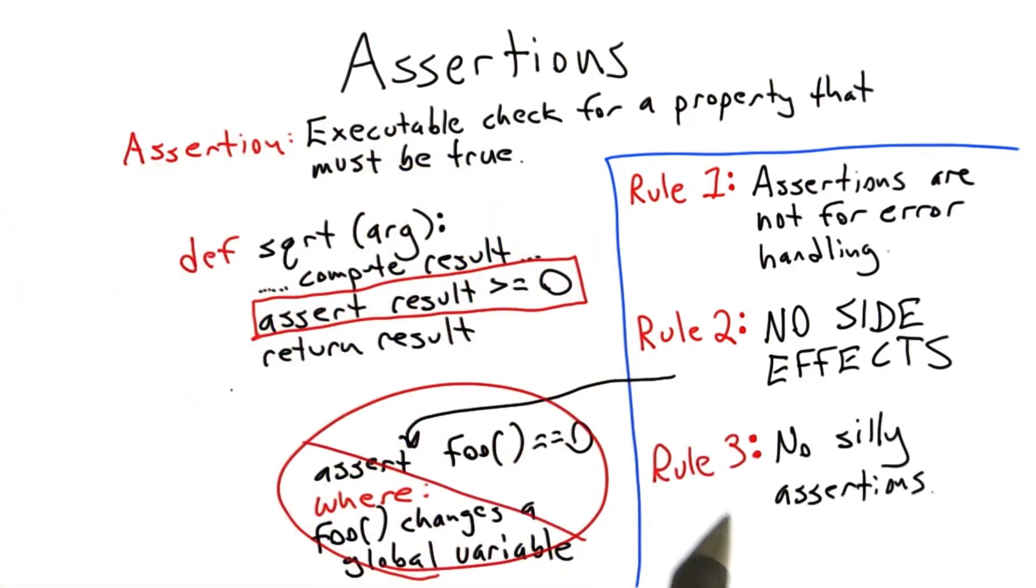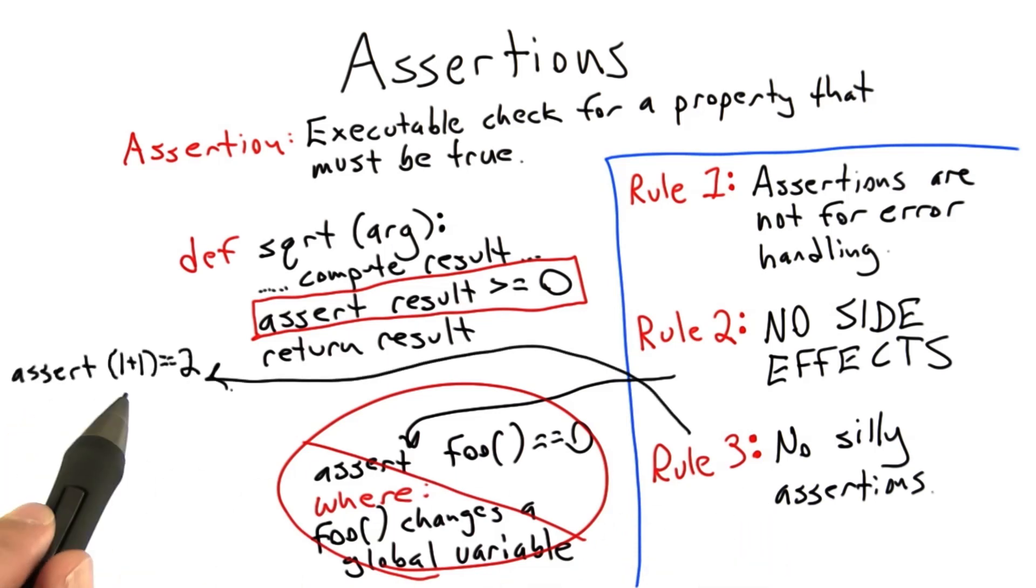Now rule 3 is, we don't want to put silly assertions into our code. Let me give an example. So here we're asserting that 1 plus 1 equals 2. Now is it conceivable that in some Python program, 1 plus 1 was not equal to 2? Sure it's conceivable, if the Python interpreter is incredibly broken. But on the other hand, if the Python interpreter is that broken, nothing is going to work. Our program isn't going to run at all. So in any case, there's no point whatsoever in doing a silly assertion like this.